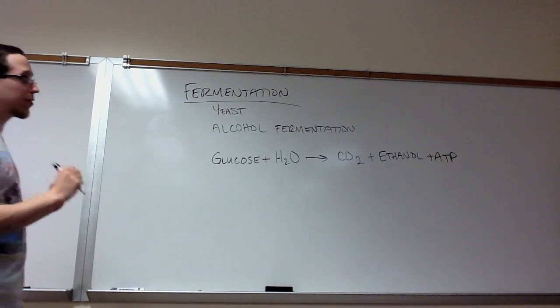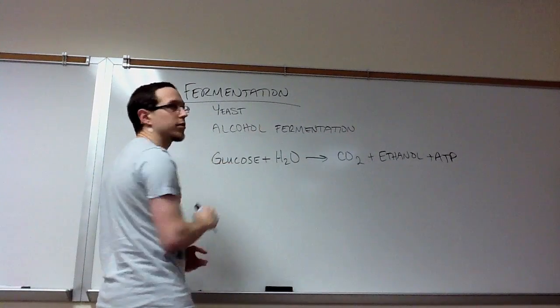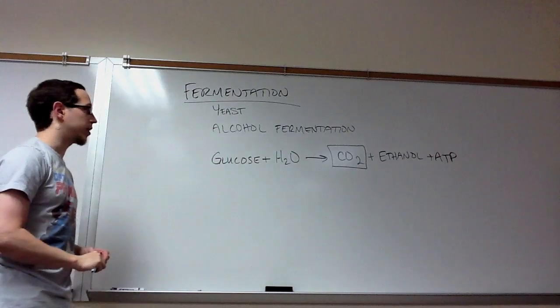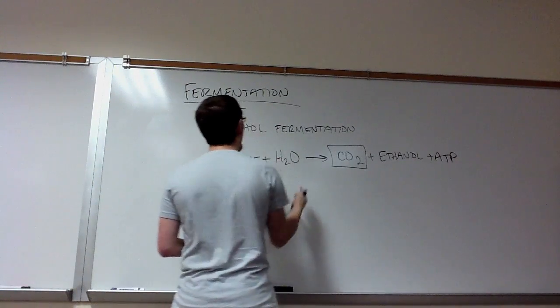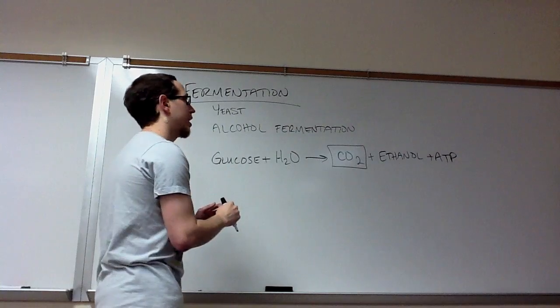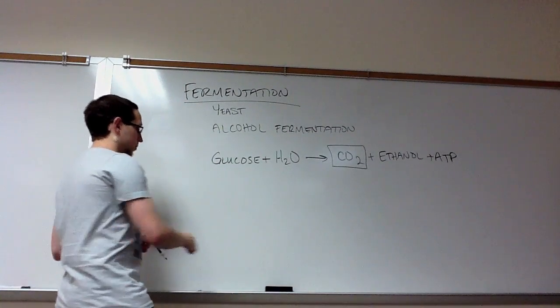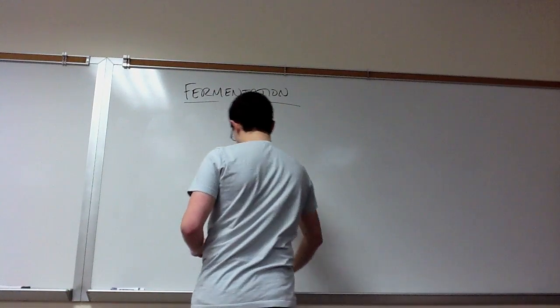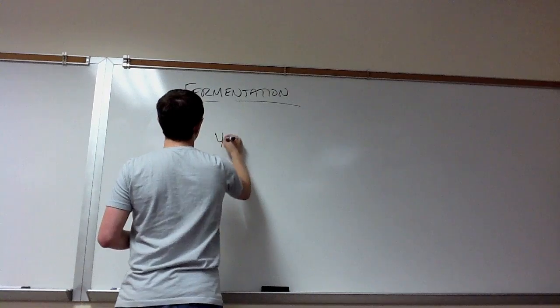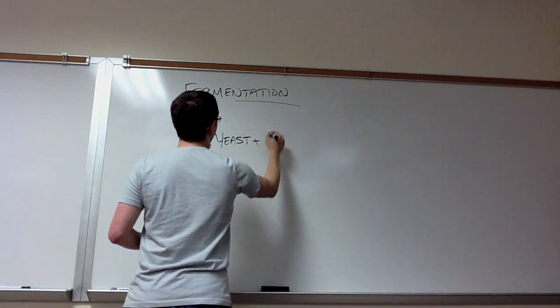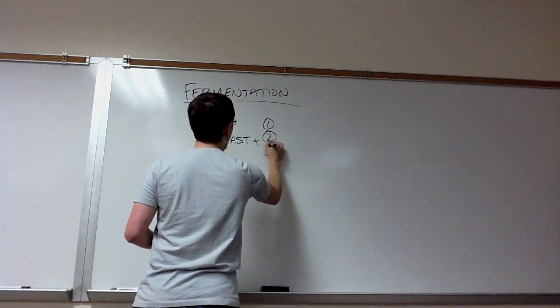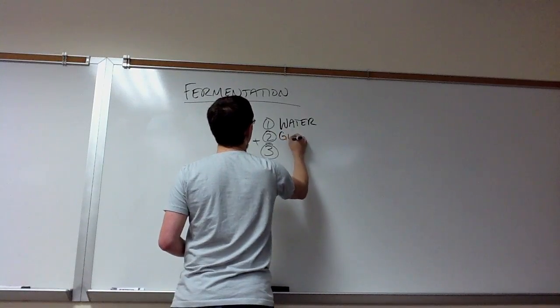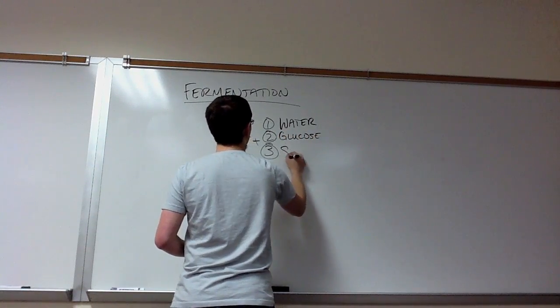What we're actually going to use to measure how quickly this process is occurring in this experiment is the amount of carbon dioxide produced. So we're going to look at how quickly yeast produce carbon dioxide in a variety of different types of environmental conditions. What we did in this experiment is we took yeast and we added one of three solutions: water, glucose, or sucrose.